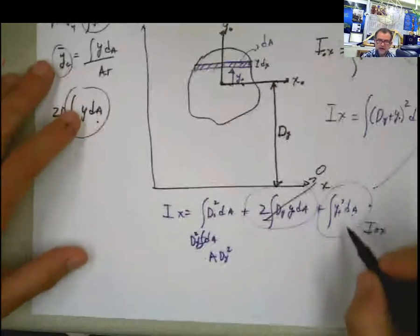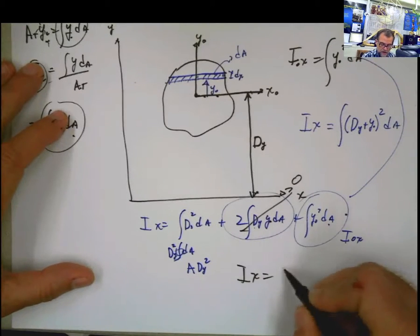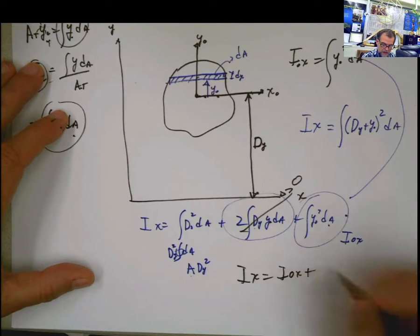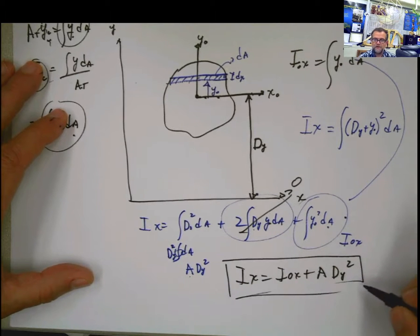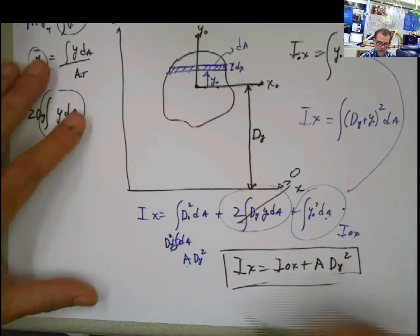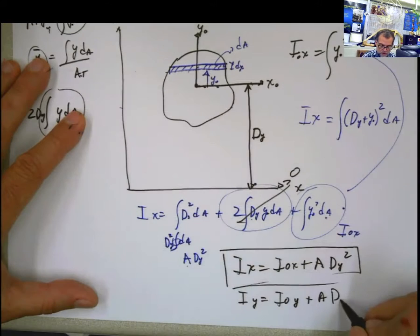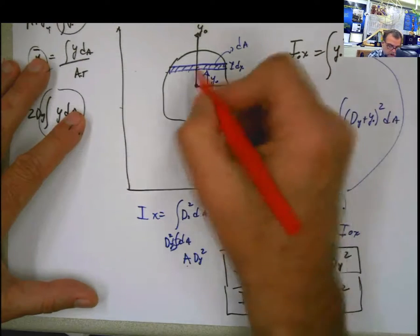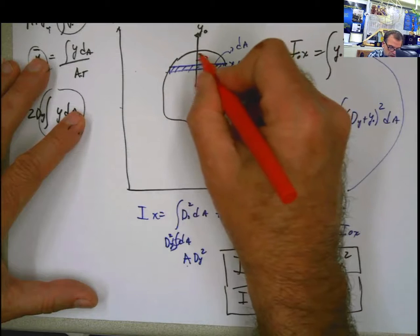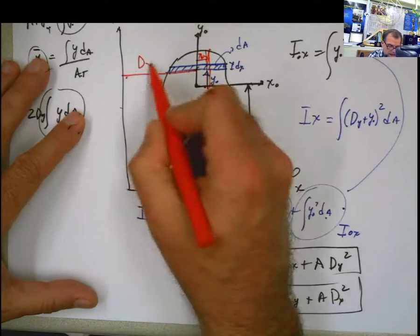So the Steiner theorem — the parallel axis theorem — states that I sub x equals I sub 0x plus A times dy squared. This is a very powerful theorem. If you want to do it in the other direction, you get I sub y equals I sub 0y plus A times dx squared. Those are the two formulas. Because if we're measuring from the other way, I have to measure in the x direction, so you get the same equation.